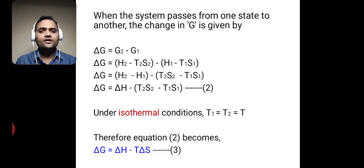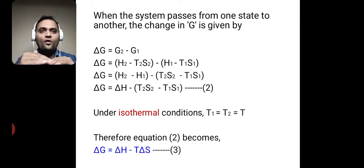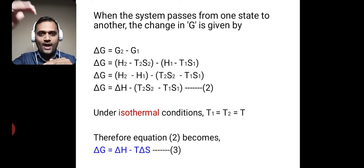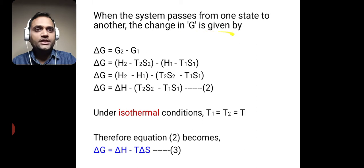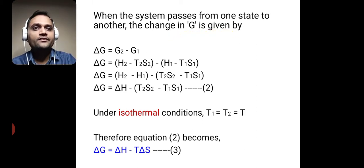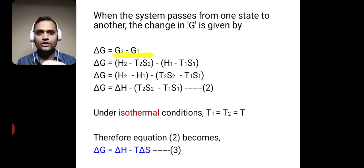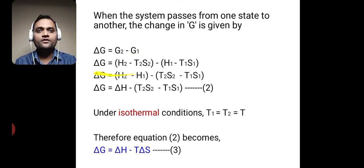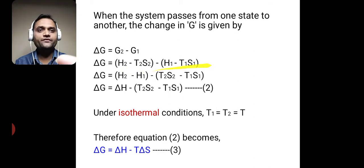Suppose the system passes from one state to another state. The change in G, that is delta G, is given by delta G is equal to G2 minus G1. From the definition of Gibbs free energy, we can write for G2: H2 minus T2 S2, and for G1: H1 minus T1 S1.